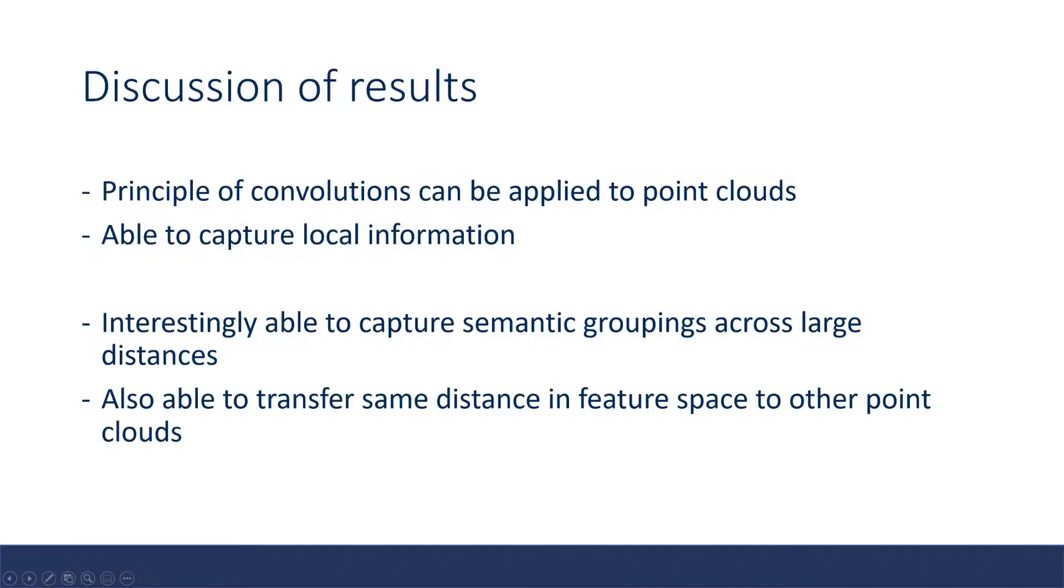The two interesting results we see in this paper is that across large distances we're still able to get semantic groupings. Semantically similar parts of the object will actually have closer distance in feature space in later layers. We're also able to transfer those same distances in different point clouds and see the same semantic groupings.